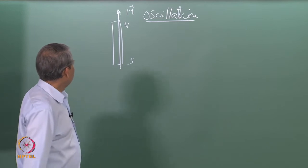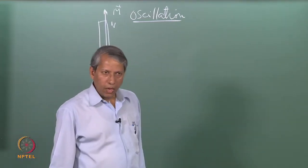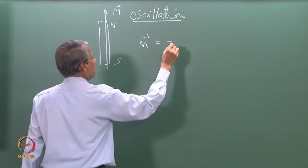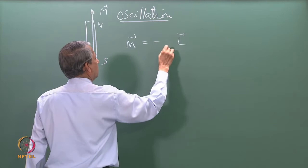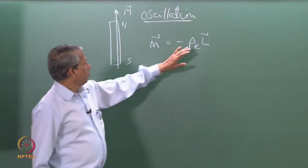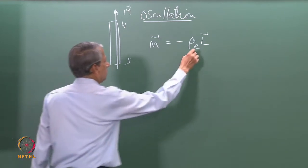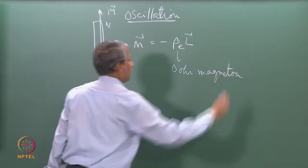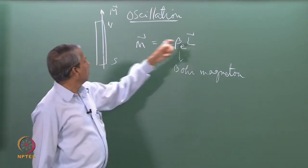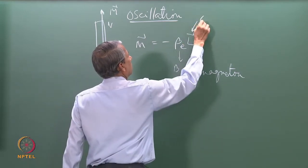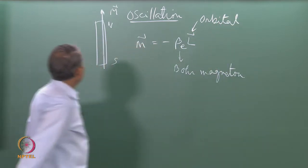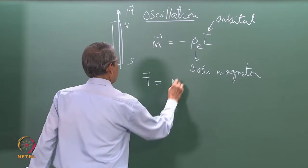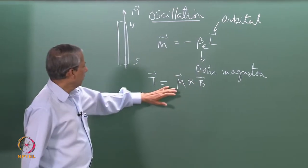We also saw that if the magnetic moment arises from its angular momentum, we could relate the magnetic moment m to the angular momentum vector times the Bohr magneton in the case of an electron. Specifically, we related this orbital angular momentum to the magnetic moment. And why does it undergo this to-and-fro motion? Because it experiences a torque — torque is equal to the vector product of the magnetic moment and the magnetic field.